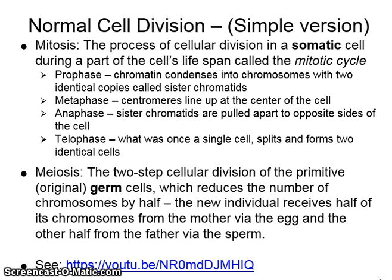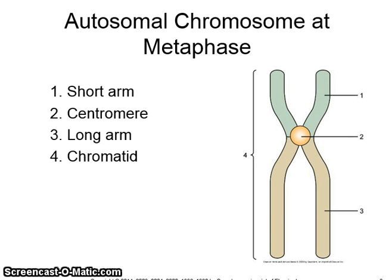Meiosis is the two-step cellular division of the primitive or original germ cells, which reduces the number of chromosomes by half. That way a new individual receives half of its chromosomes from the mother via the egg and the other half from the father via the sperm. There is a YouTube link included which has a very interesting and simple animation. This is an image of an autosomal chromosome at metaphase. All chromosomes have short and long arms, the centromere, and this is known as a chromatid.